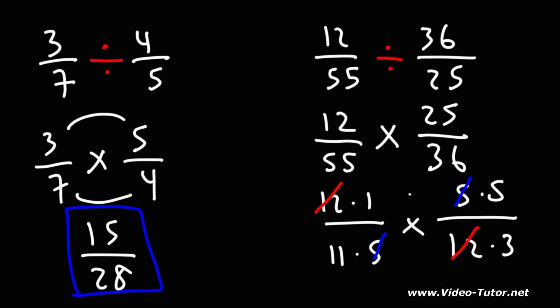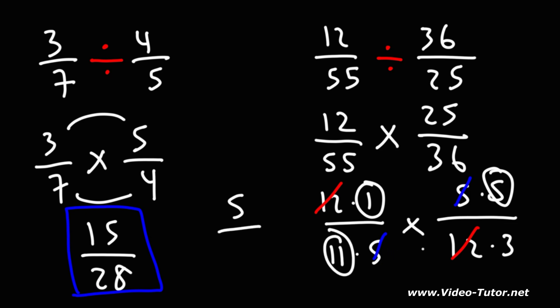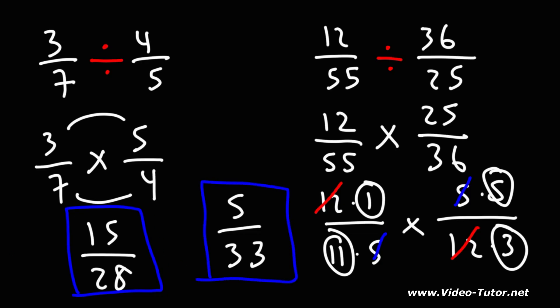On top, we multiply across: 1 times 5 is 5. On the bottom, 11 times 3 is 33. So the answer is going to be 5 over 33. That's how you can divide two fractions together.